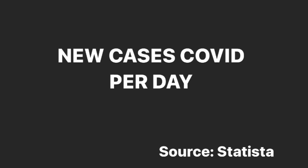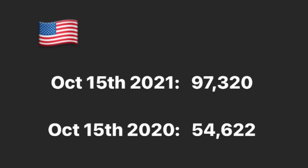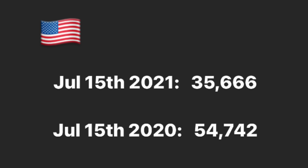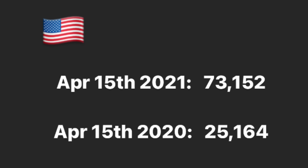Let's start with the United States — new cases of COVID-19 per day. October 15th 2021: 97,320 cases. October 15th 2020: 54,622 new cases. July 15th 2021: 35,666 cases. July 15th 2020: 54,742 new cases. April 15th 2021: 73,152 new cases of COVID-19. April 15th 2020: 25,164 new cases.